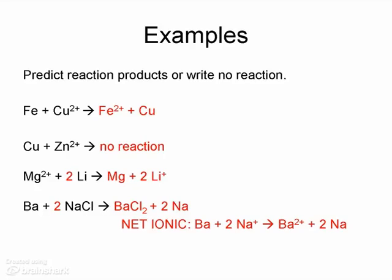But if we want to write a net ionic equation, we can just do that by taking out the chloride since they're not actually doing any reacting. And we'll get barium metal reacting with two sodium ions to make barium 2+ and two sodium.